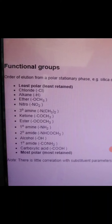The most polar group is carboxylic acids, then primary amide, then alcohol, then secondary amide, then primary amine, then ester, then ketone. The least polar are alkane and alkyl chloride.